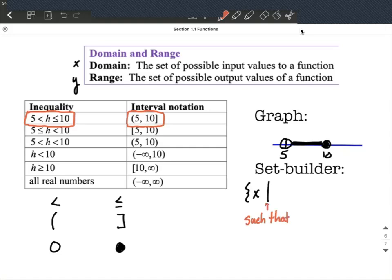All right, so that vertical line you say such that, and then you use your inequality notation, cut and paste it over here after that vertical line. So we'd say, well in our case it's 5 is less than h is less than or equal to 10. Then we close this off with another curly bracket.